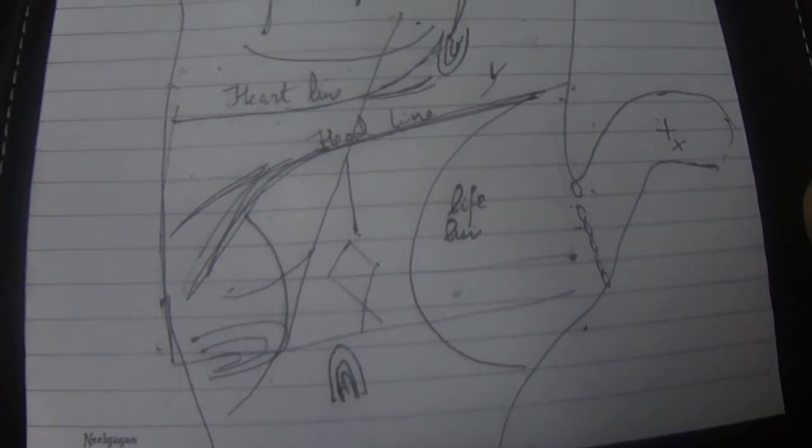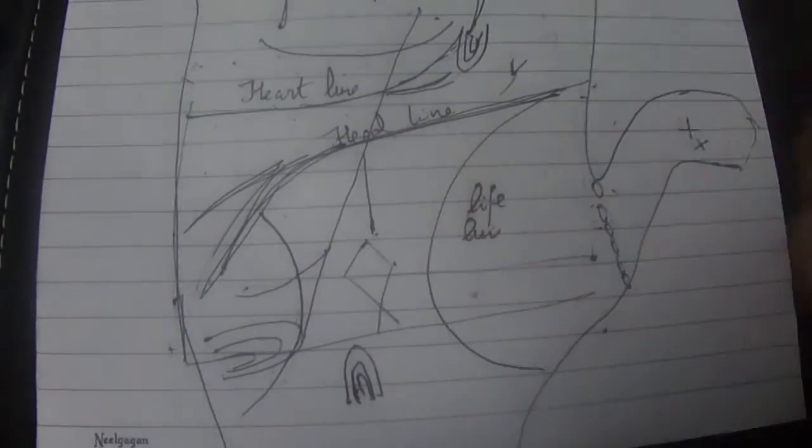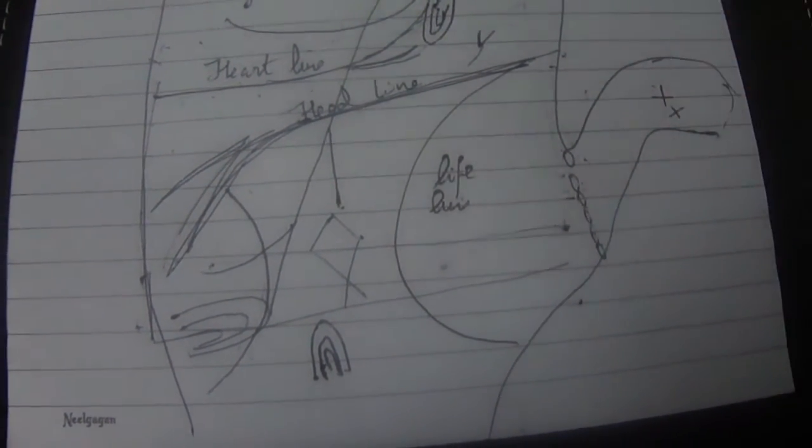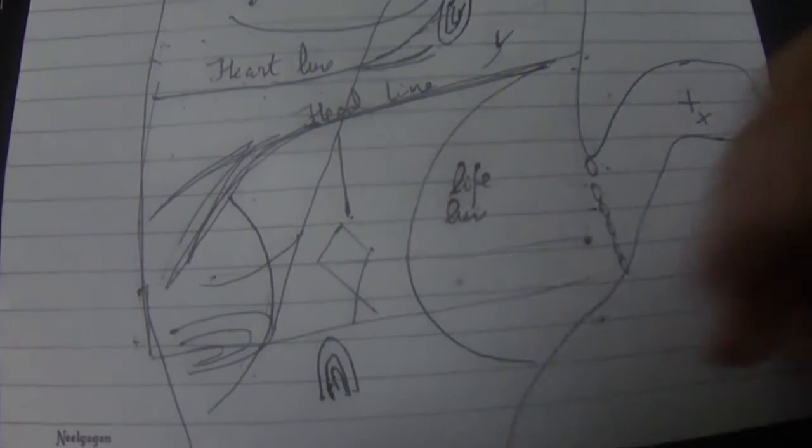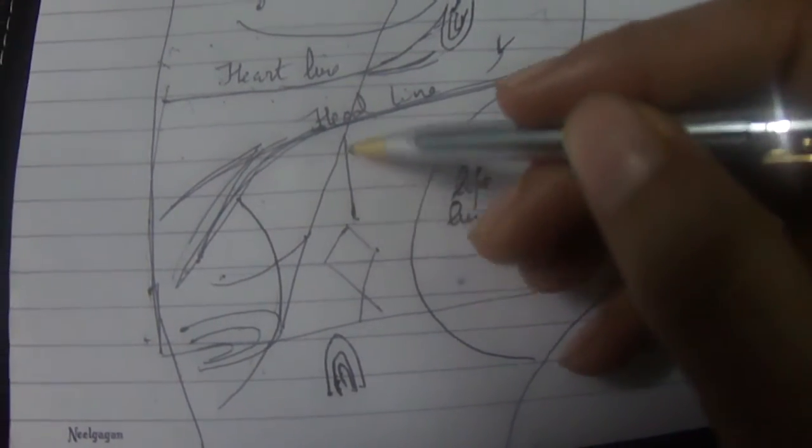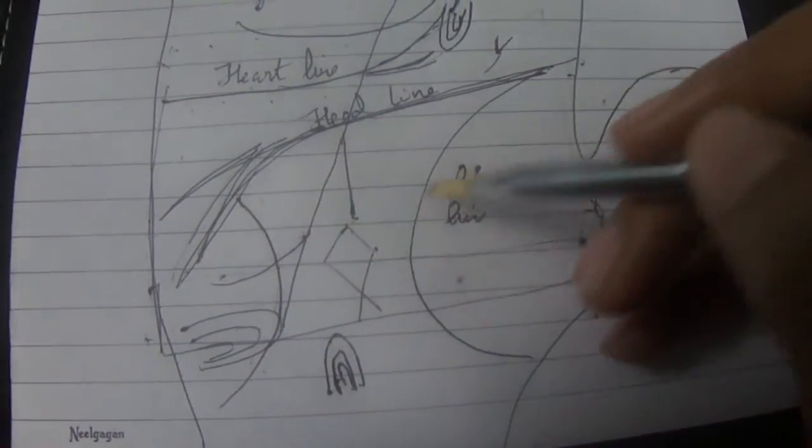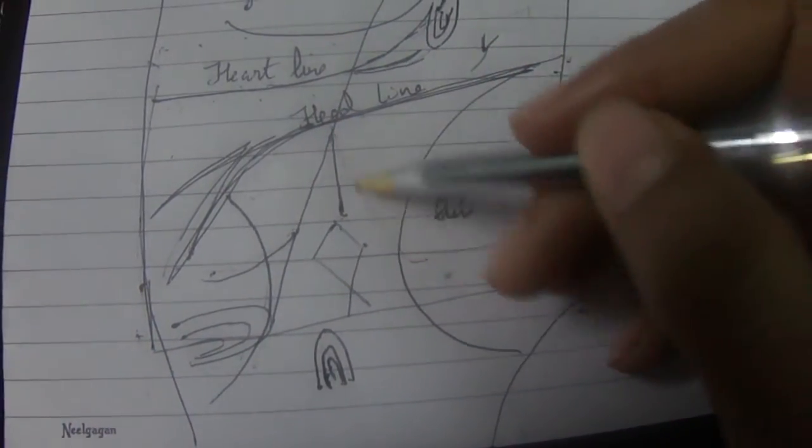Sometimes we also see a line coming from the center of the palm going and joining this line. This line is also considered good and can mean success because of some mechanical device—maybe using a computer, camera, or something else. Whenever it's coming from the moon, it's the help of others. Whenever it comes from inside the Venus, it is someone from the family helping the person improve his or her fate.